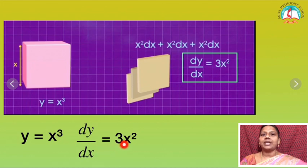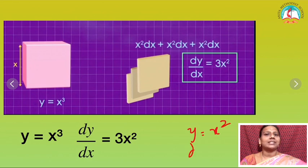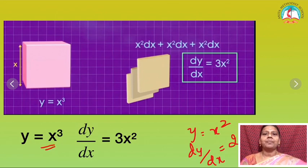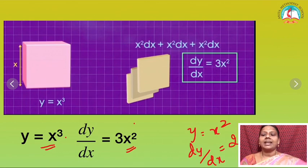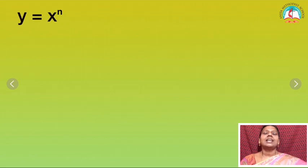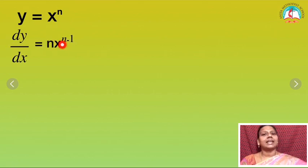So here, for y equal to x square I just bring that 2 down — it becomes dy by dx is 2x. And for y equal to x cube, 3 comes down and I reduce the power by 1. So the general rule is: if y is equal to x to the power n, then dy by dx is nothing but n into x to the power n minus 1. I am just taking the power and reducing it by 1.